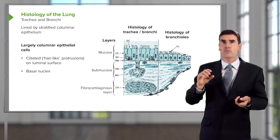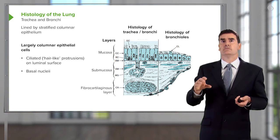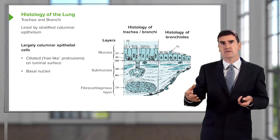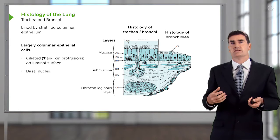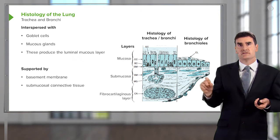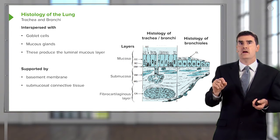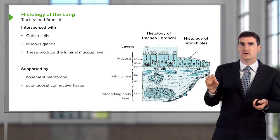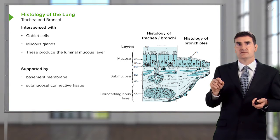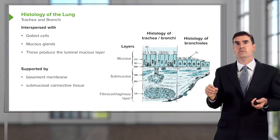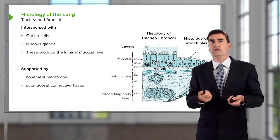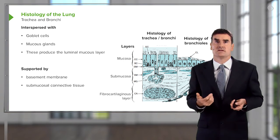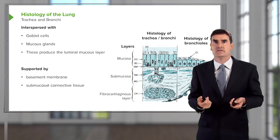Underneath this layer of epithelium there will be various submucosal structures — a little bit of muscle around the main bronchi, some fibrocartilaginous layers, connective tissue, etc. Interspersed in the mucosal layer there will be the occasional goblet cell which produces mucus, and there are also submucosal glands which produce mucus, as shown in the middle part of this diagram, with an opening coming out into the epithelium from which mucus is secreted by the cells within the submucosa.